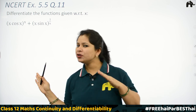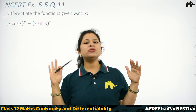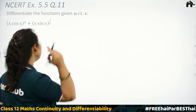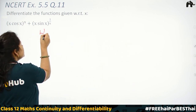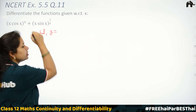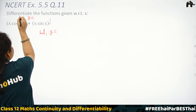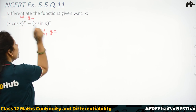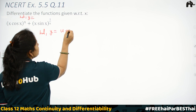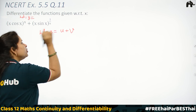So if you have seen our last video with the last exercise questions solved, you must have understood. Let's see here — first of all, let's assume that y is this expression. So let's write y, which equals u plus v.